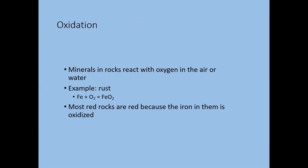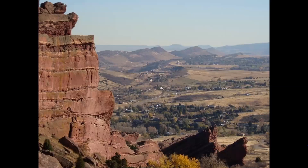Oxygen is common in both air and water, so minerals react with oxygen in air and water. One of the most common types of chemical weathering is rust. Anytime you see a red rock or red soil, it's rusted — iron has combined with oxygen to give us FeO₂, iron oxide, better known as rust. These are the red rocks outside of Denver, Colorado, where the iron in the rocks has been exposed to oxygen.